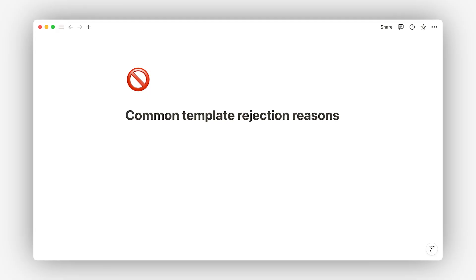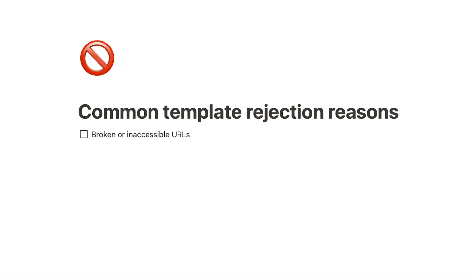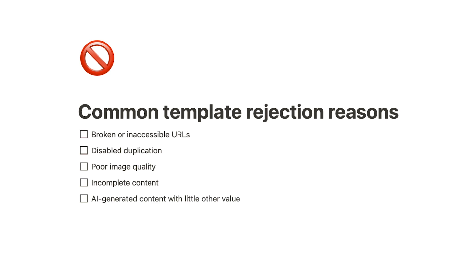Before we move on, I want to cover a few reasons templates get rejected. The most common issues include broken or inaccessible URLs, disabled duplication, poor image quality, incomplete content, AI-generated content with little other value, branding issues, and unsupported languages. To avoid these common issues, double-check your URLs, ensure duplication is enabled, and take care to submit high-quality content in both your template and your listing.